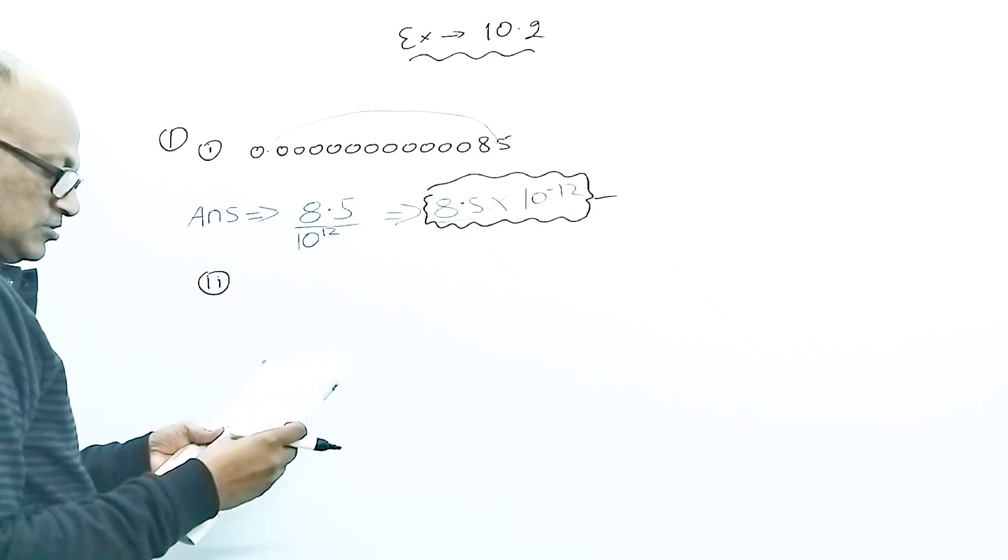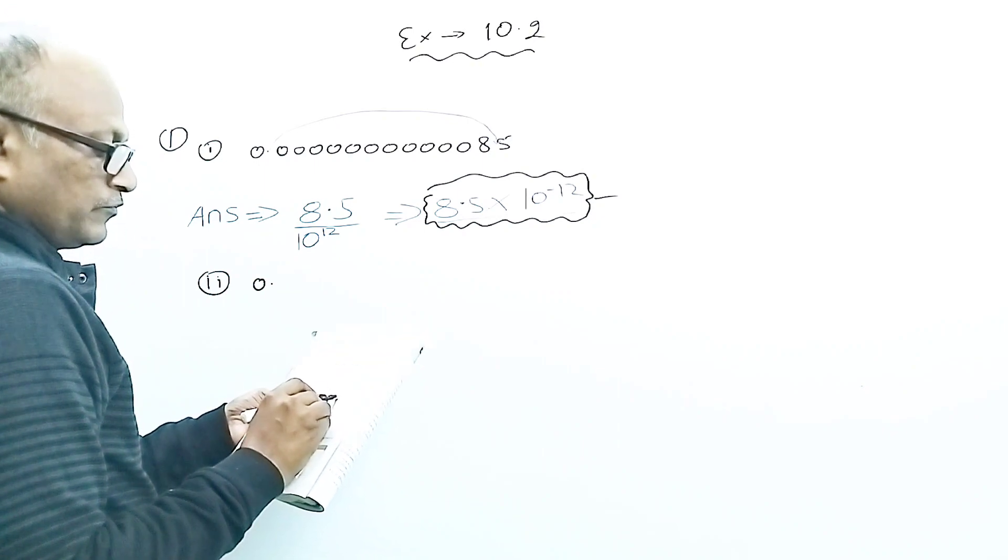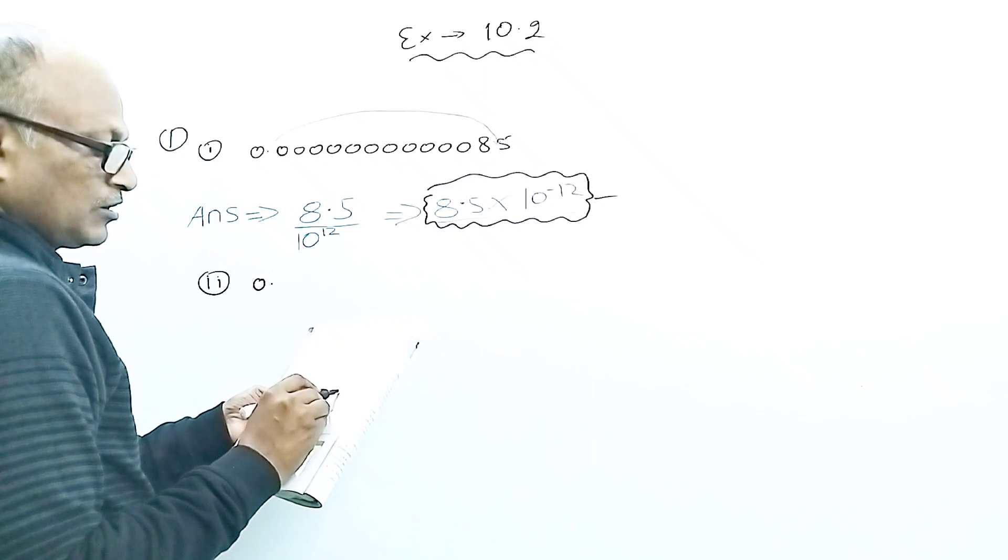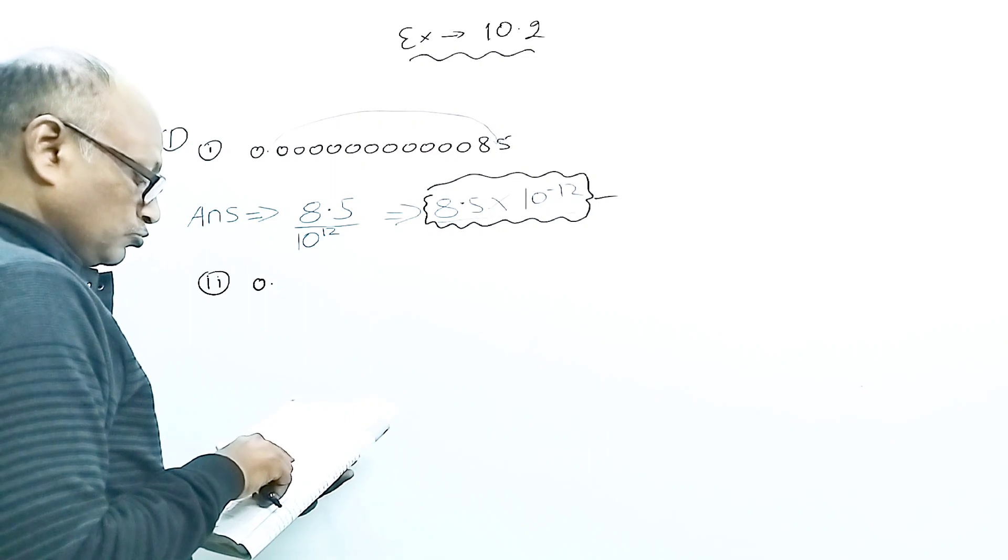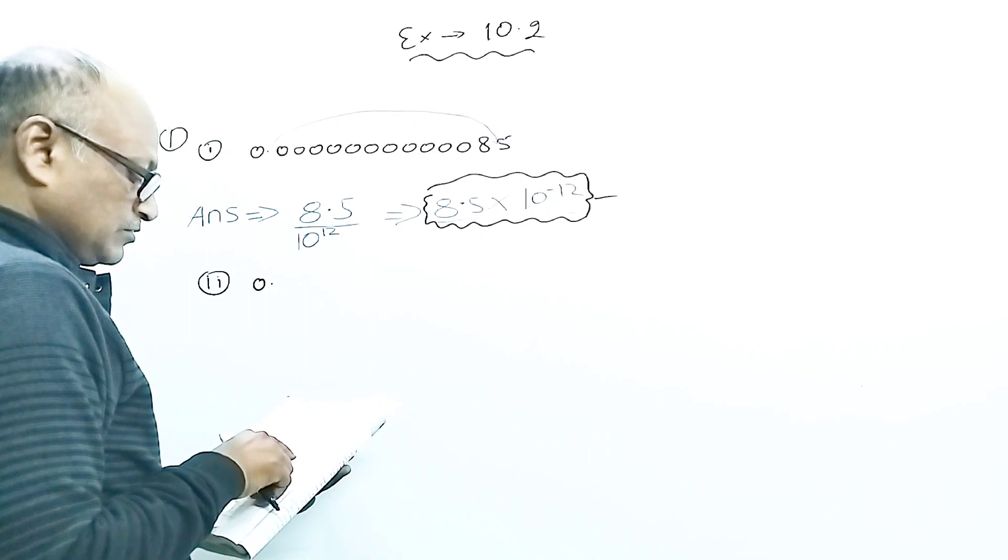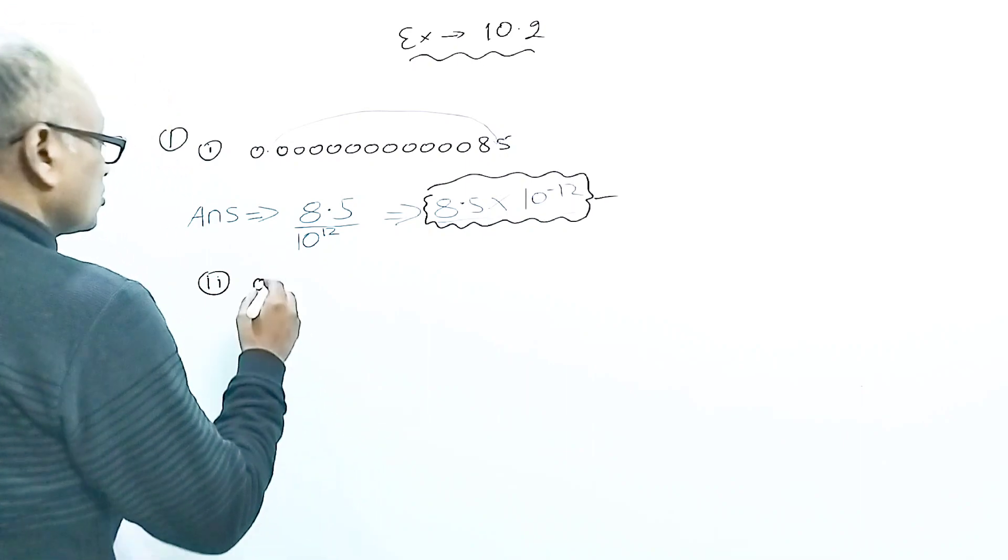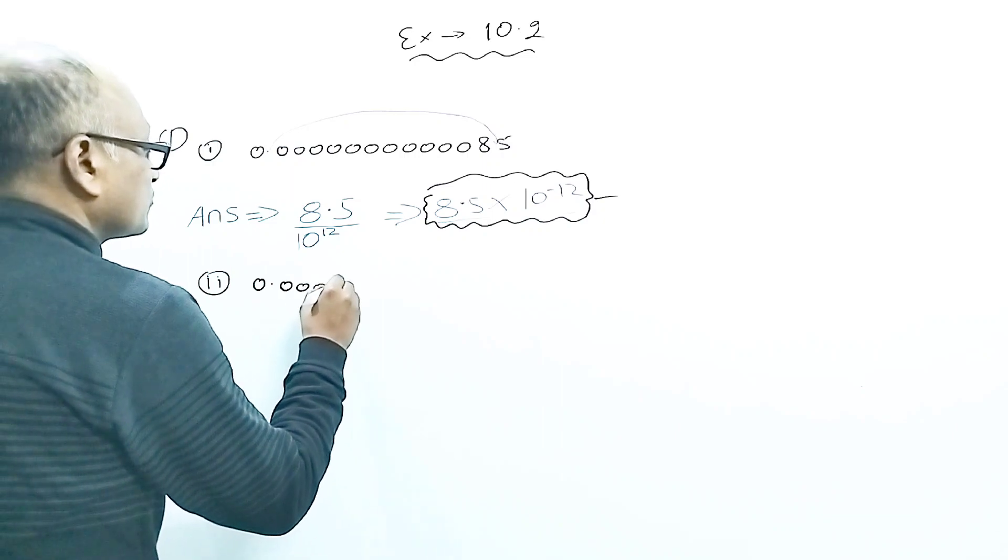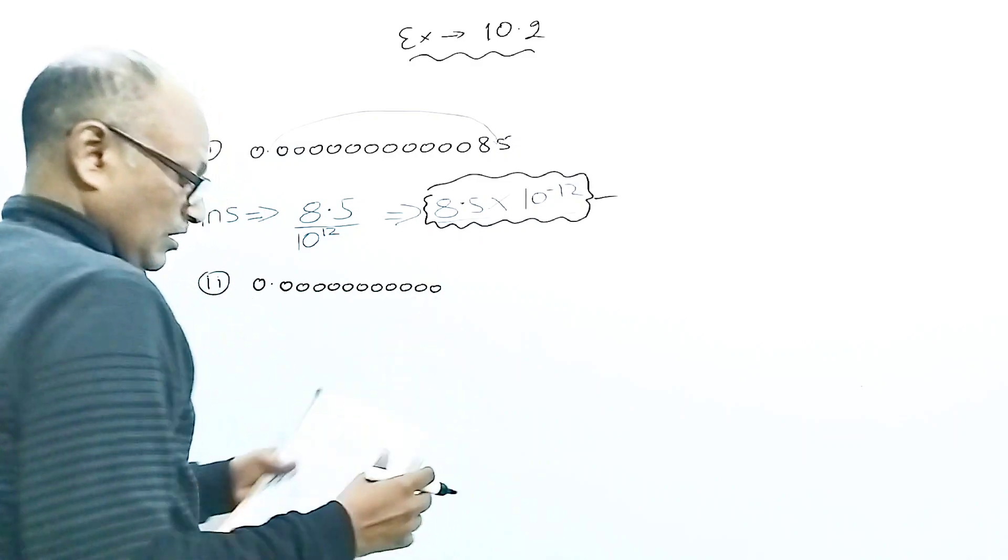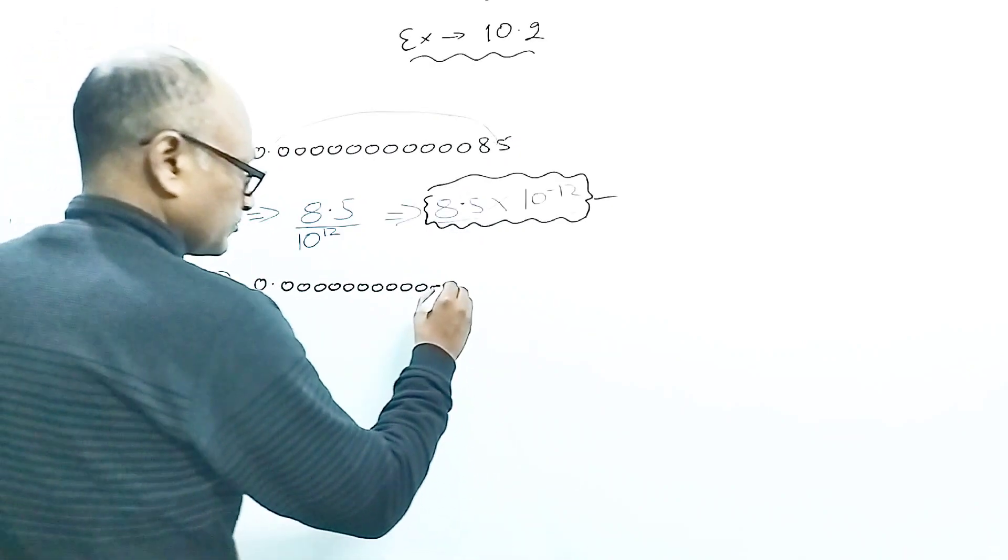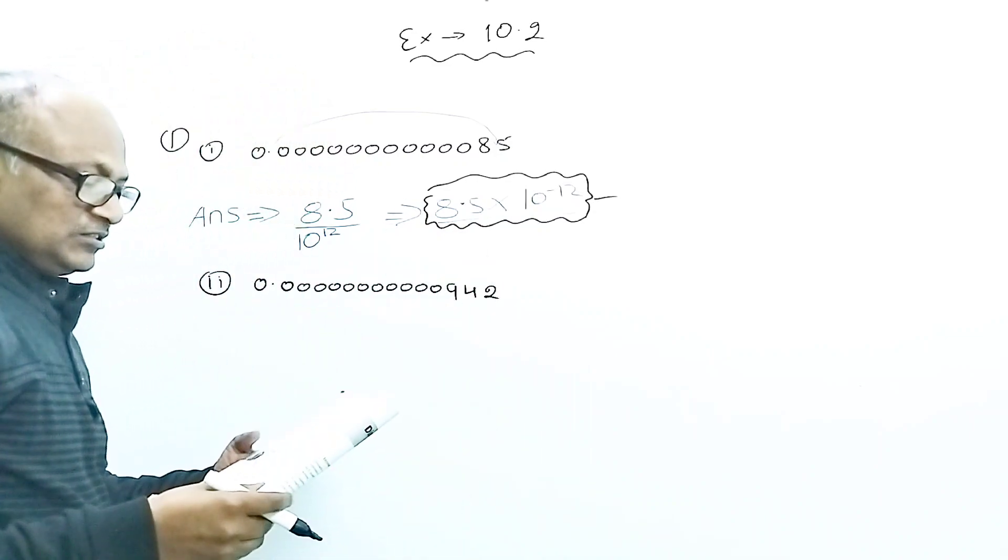And this is zero point, how many zeros are there? One, two, three, four, five, six, seven, eight, nine, ten, eleven. Again 11 zeros. And after that nine, four, two. Again you have to convert this in standard form.